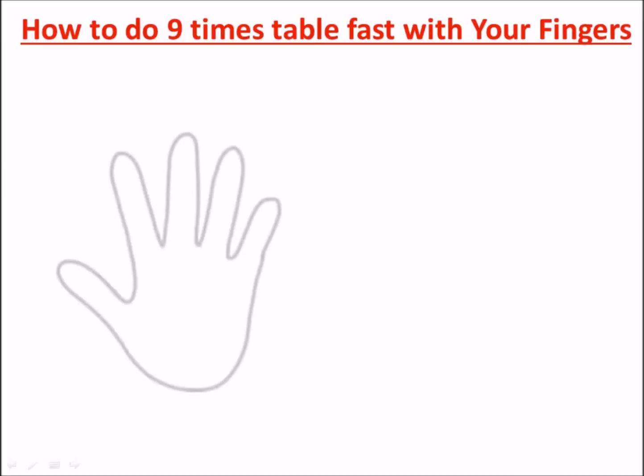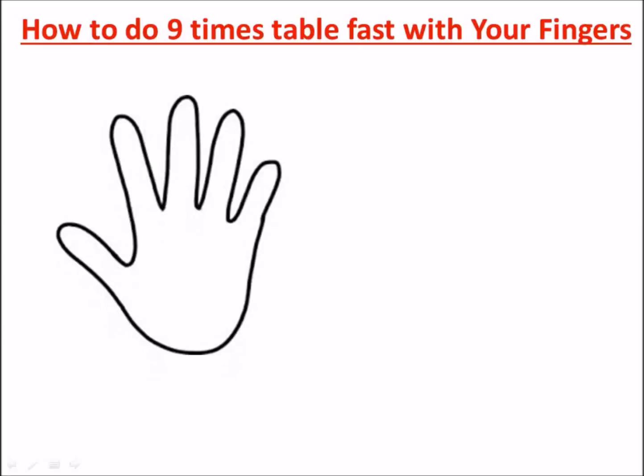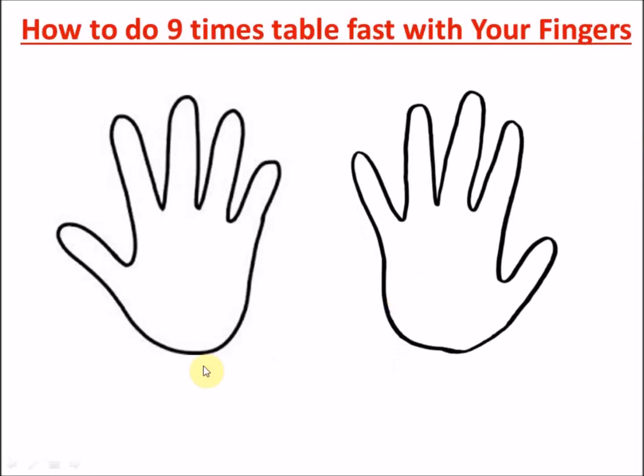Today's trick is about the nine times table. How do you do this with your fingers? You face your hands towards your face as if you're looking at it. This is your left hand and this will be your right hand.